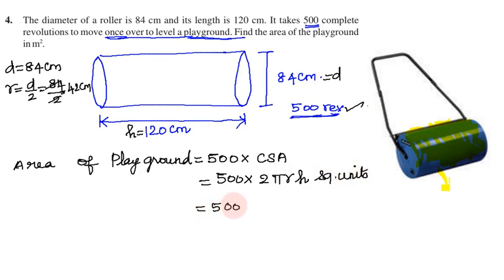So 500 into 2 is 1000. 500 into 2000 into 2 into π value 22 by 7. Sorry, 500 into 2 multiply, 1000 into 2 into radius. Radius is 42 into height. Height is 120.